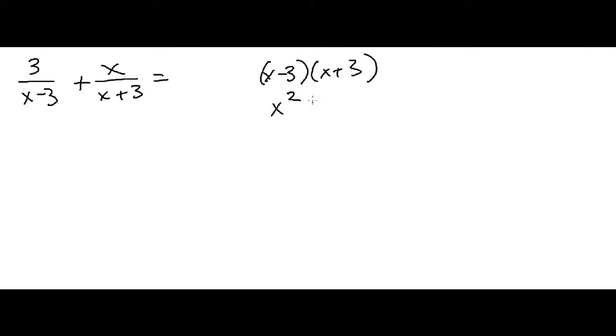So if you FOIL that out you're going to get x squared minus 9.